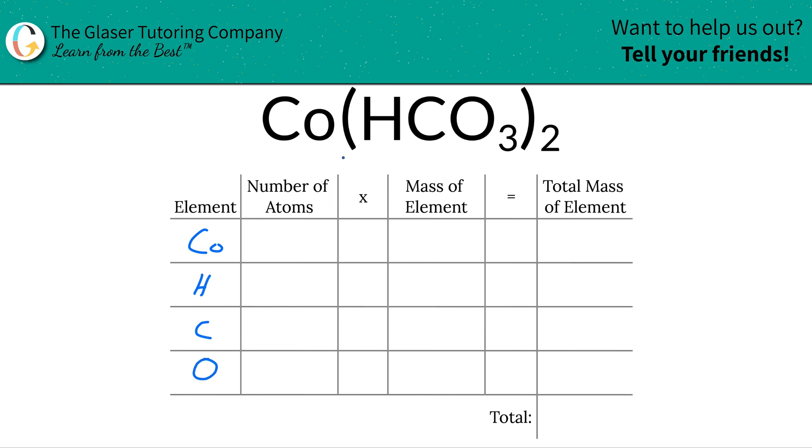Next, write down the number of atoms of each element - that's where the subscripts come into play. For cobalt, there's an invisible one at the bottom, meaning one cobalt atom. For hydrogen, there's also an invisible one, meaning one hydrogen, but this hydrogen is tied up inside the polyatomic anion hydrogen carbonate, and we have two hydrogen carbonates. Therefore, we'll have two hydrogens in total.